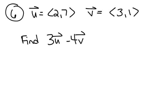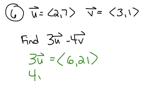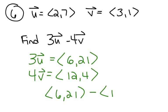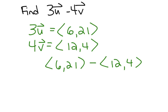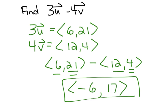Vectors in component form work like any other real numbers. If vector u is (2, 7) and vector v is (3, 1), to find 3u minus 4v: first find 3u, which is (6, 21) by distributing. Then 4v is (12, 4). Subtract the common components: 6 minus 12 is negative 6, and 21 minus 4 is 17.